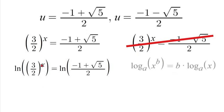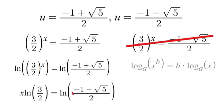In this case, our exponent is x. So we can move x to the front of the natural log. We have x natural log 3 over 2 equals natural log of negative 1 plus square root of 5 over 2.